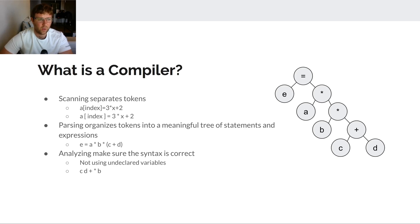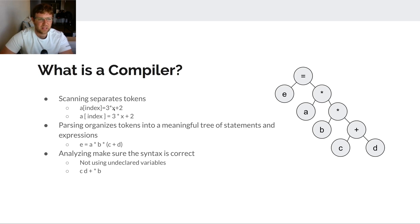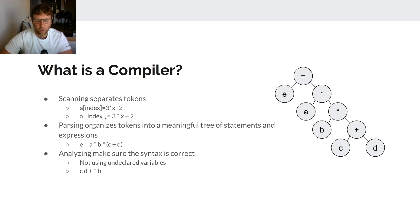The scanning phase separates tokens. As you learn a language, you learn what things are allowed to be next to each other. For something like '3 * x + 2', the compiler recognizes that the number three is its own piece, separate from the multiplication sign, separate from the x, separate from the plus two. It recognizes that a bracket isn't a valid variable name and that all the letters in 'index' together form one single token.